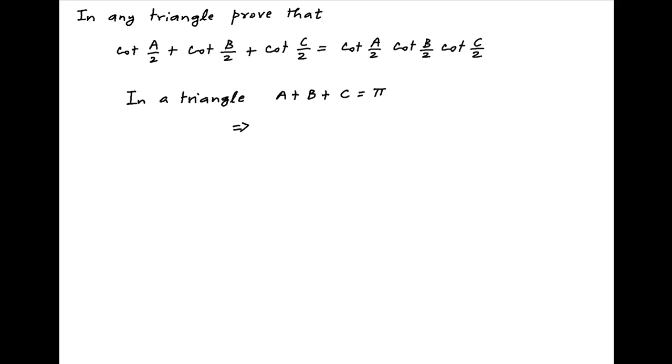This can be rearranged as pi minus C equals A plus B. Divide both sides by 2 and now take the tangent of both sides.